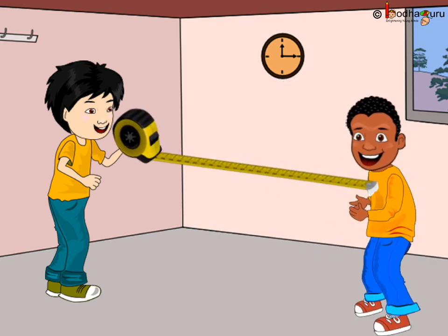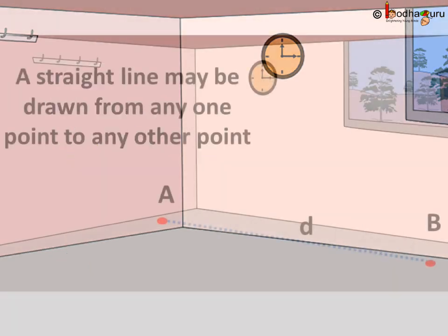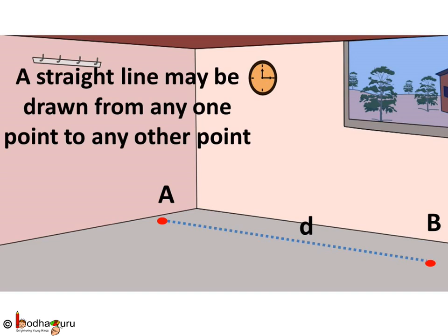You keep the measuring tape straight like a straight line. But why? You see, your position and your friend's position are two points and the length of the straight line joining you two is the distance between you two.